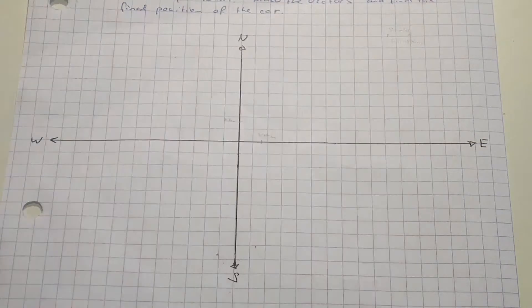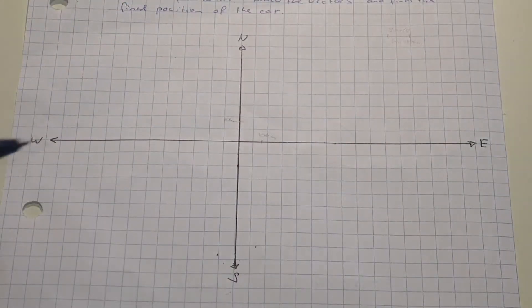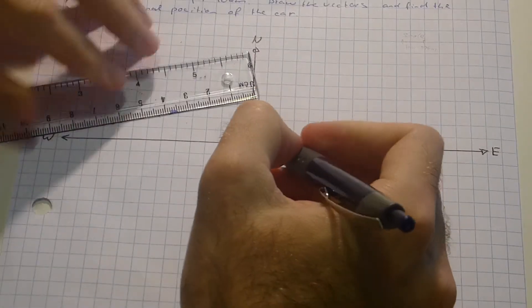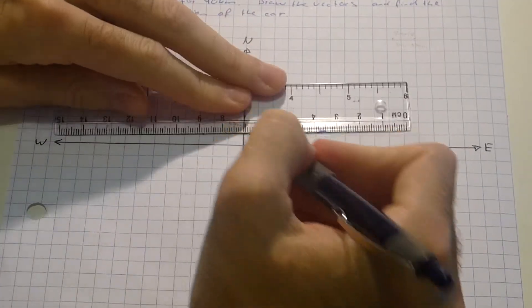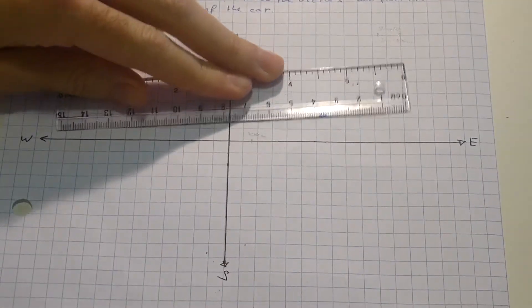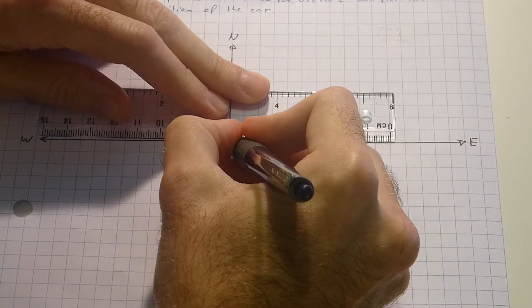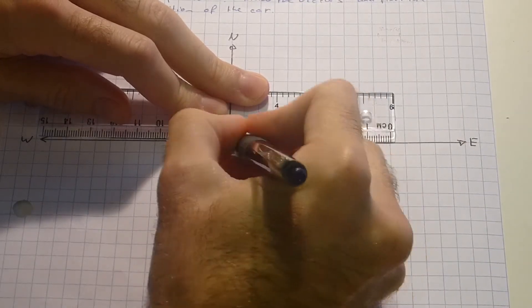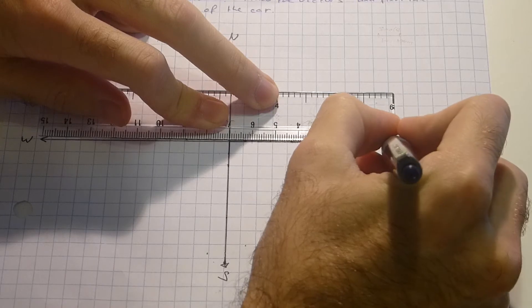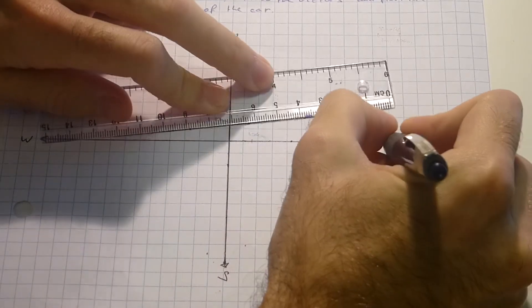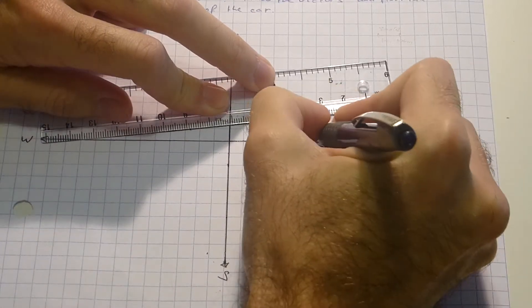Now my first vector will be 70 km to the east. Therefore 7 cm to the east is an easy one. Let's say my first displacement.